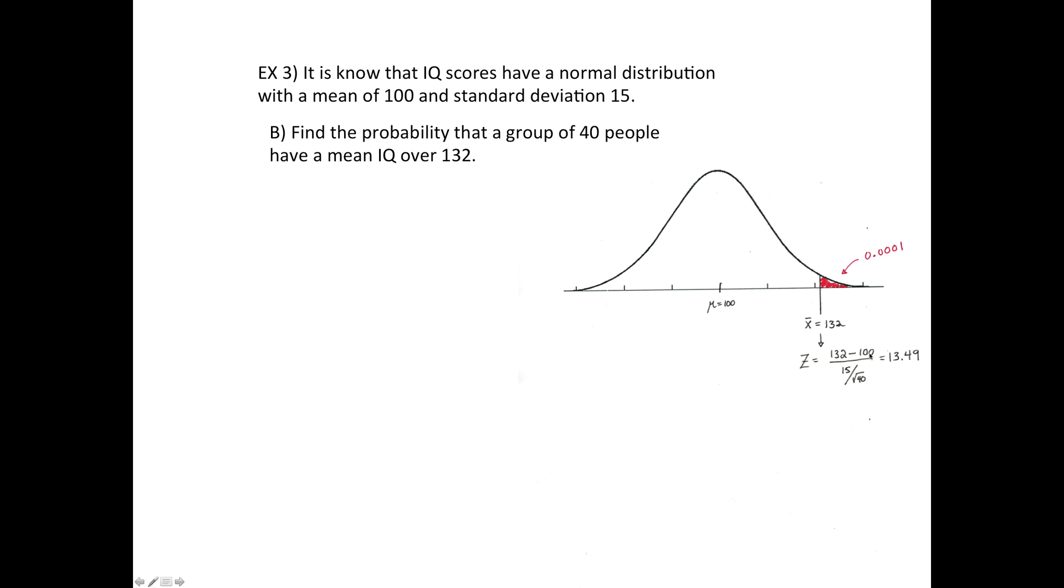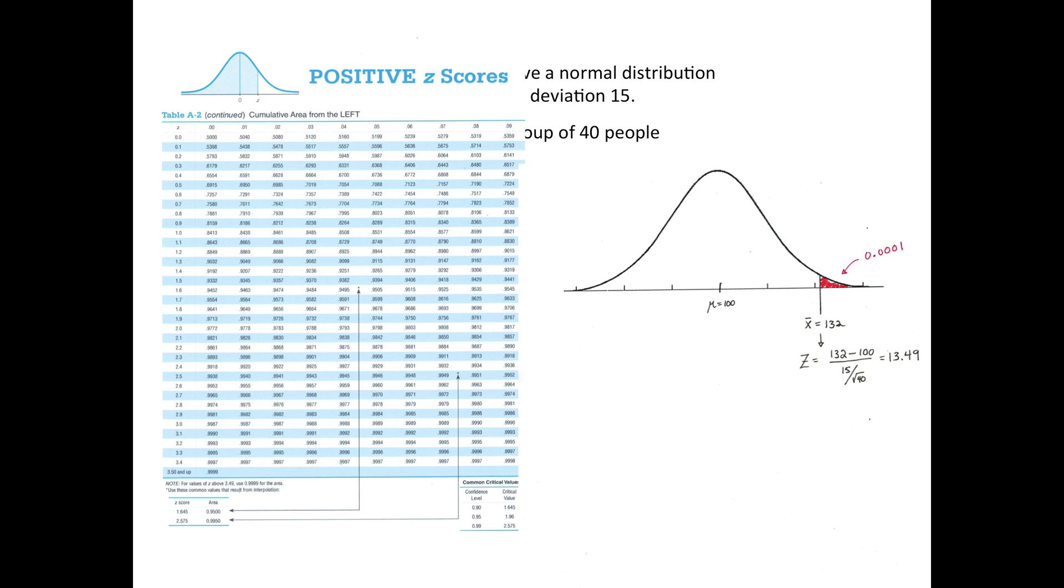When you do this, make sure you put the numerator in parentheses and the denominator in parentheses, and in this case you would end up with a 13.49. Now this is the first time that we've run across this in this class. If you look at the table down here at the bottom, it says if you're looking for 3.5 and above, then just use 0.9999. That means the right side is 0.0001, which is a much smaller answer than we got before, just as predicted.